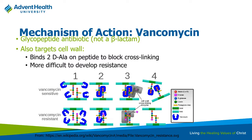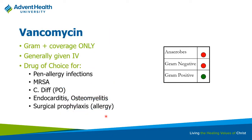Because there's no beta-lactam ring, beta-lactamase has no effect on vancomycin, so it retains activity even against strains resistant to cephalosporins or penicillins. However, resistance still exists — bacteria can modify the terminal amino acids, turning D-alanine to D-lactate, preventing vancomycin from binding. Vancomycin only covers gram-positives, but notably covers MRSA — methicillin-resistant Staph aureus — and is one of the most commonly used agents for that.